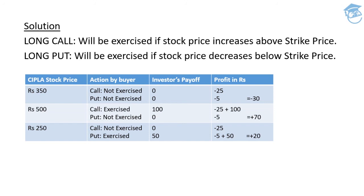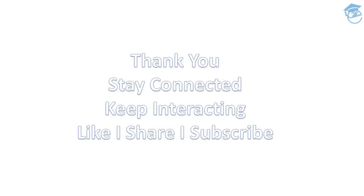This was the last question of this particular presentation and the last question of the topic of derivatives. To summarize: long call is exercised only if the stock price increases above the strike price, and long put is exercised only if the stock price decreases below the strike price. In scenario one, loss of 30 rupees; at 500, profit of 70 rupees; at 250, profit of 20 rupees. This question has been asked in 2008, 2010, 2011, 2013, and 2015 — it is one of the hot favorite questions. I hope you are super confident now. Do not skip your revisions — retain what you have learned. If you found this video informative and useful for your friends, do share it. Thank you on behalf of the Edupedia world, stay connected, God bless you all, take care, bye.